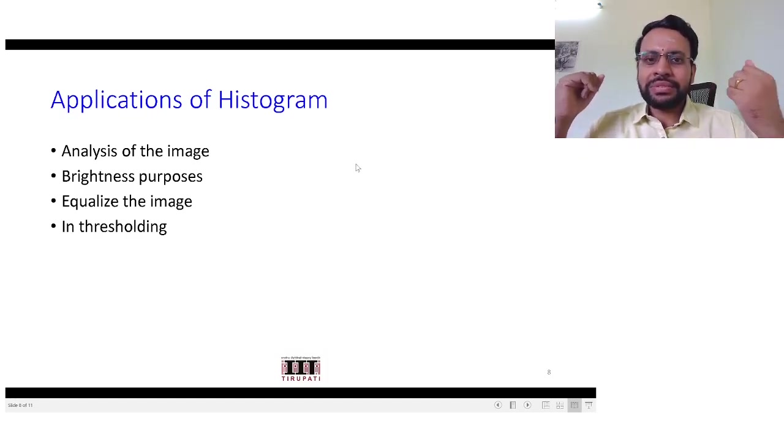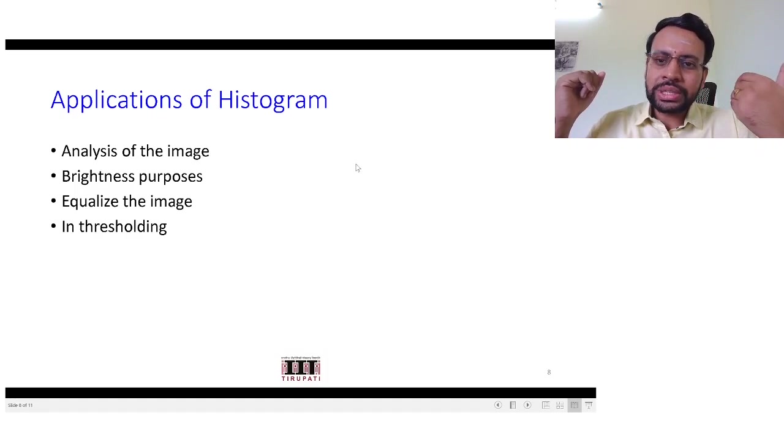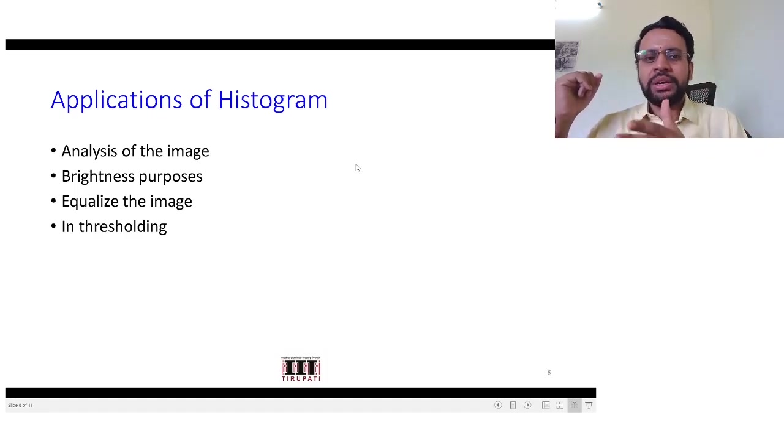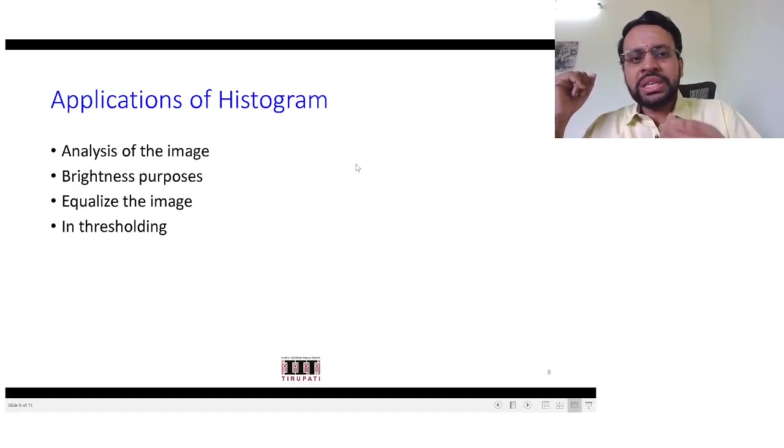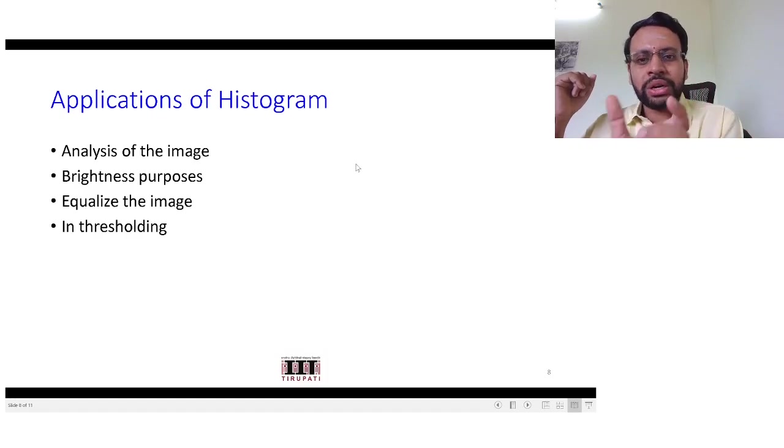There are various applications of histogram. For example, one we have already seen right now is analysis of the image just by looking at the histogram. As we did just now, you will be able to say whether it's a dark image or a bright image or a low contrast image or high contrast image. Another one is you could use this histogram for increasing the brightness also, in some cases particularly when the intensity distributions you see are concentrated over the dark region or on the left hand side of your histogram.